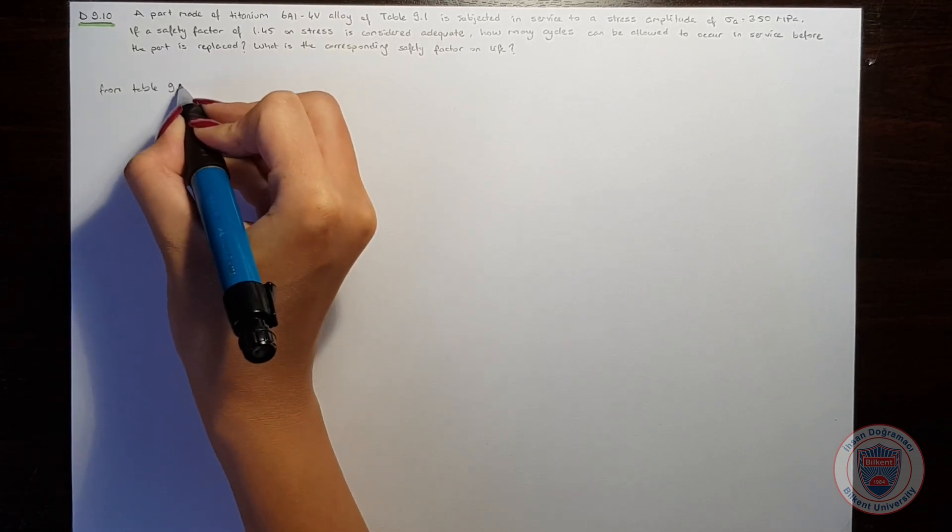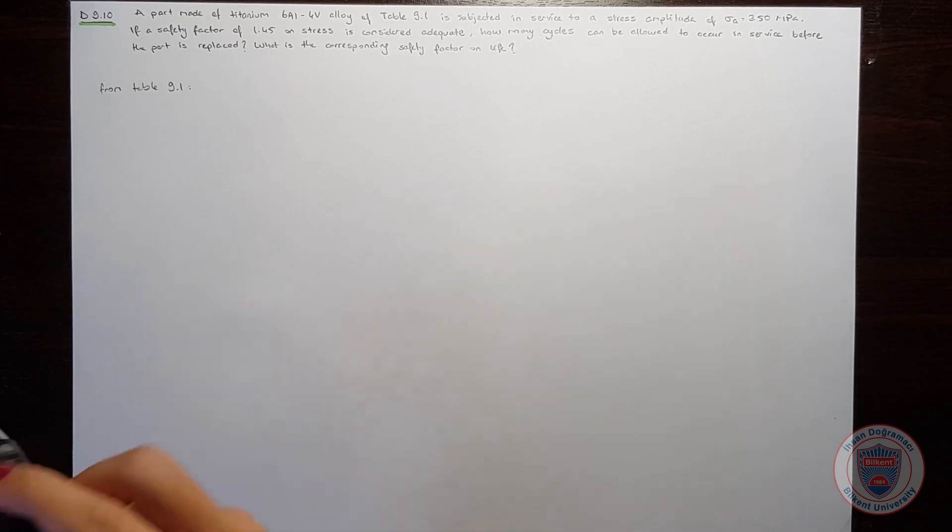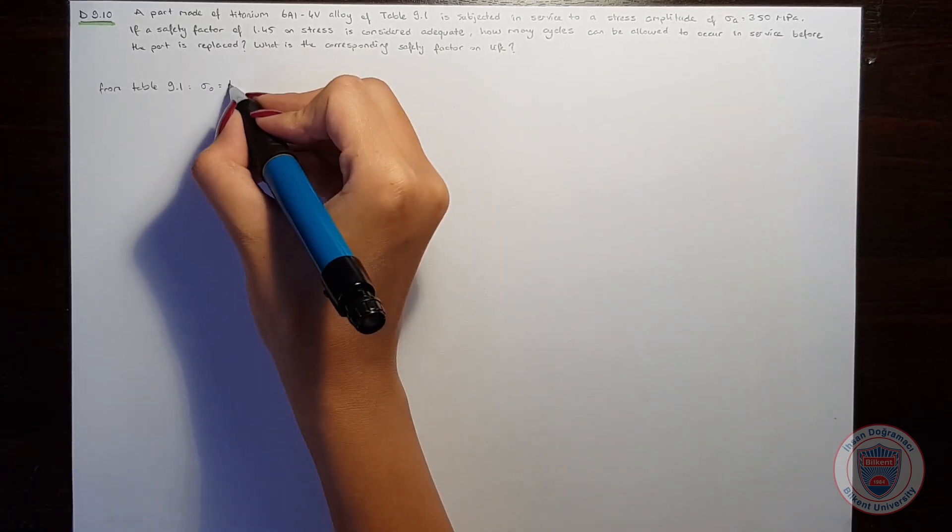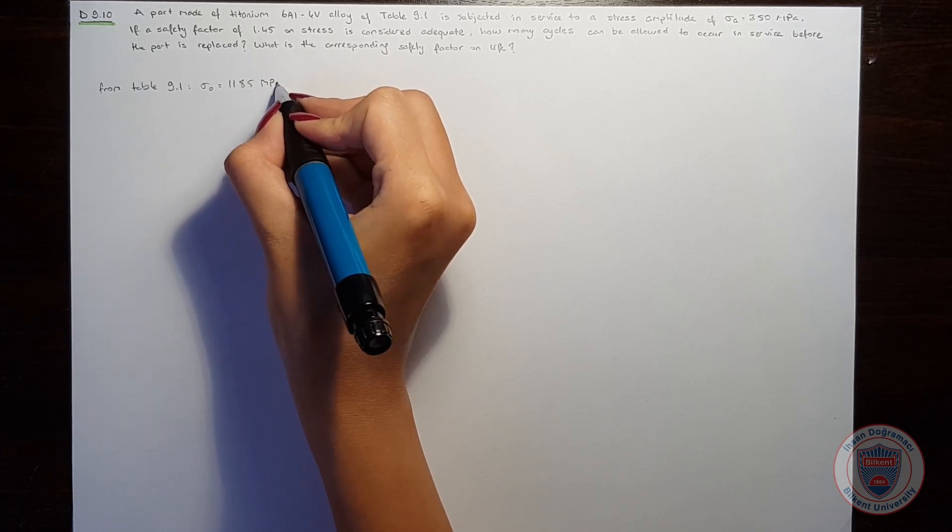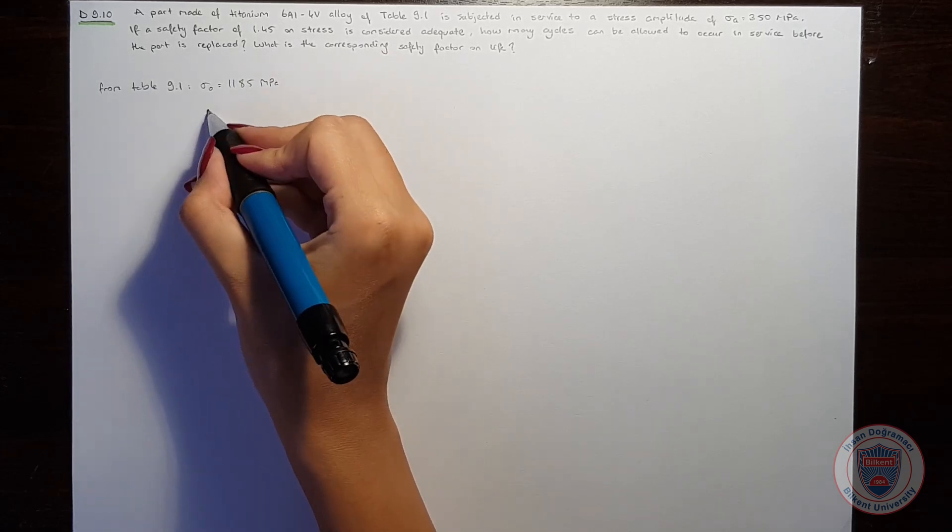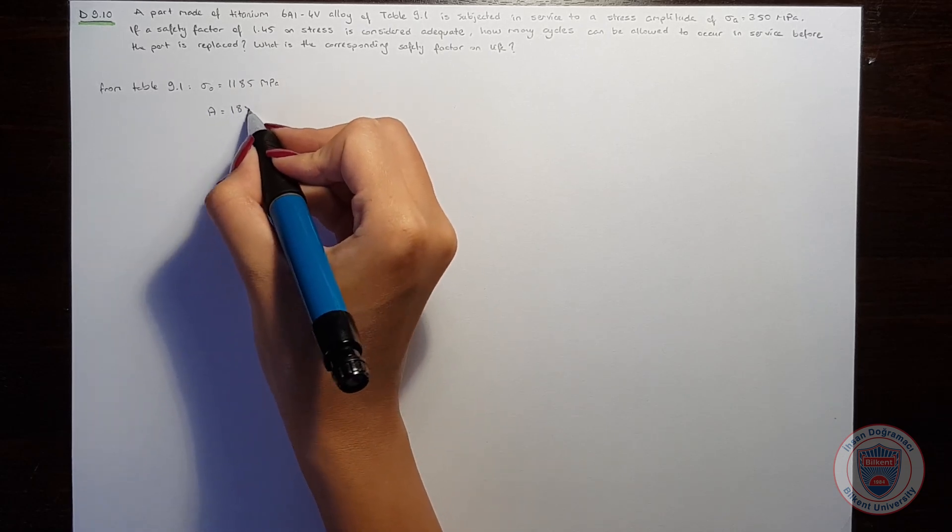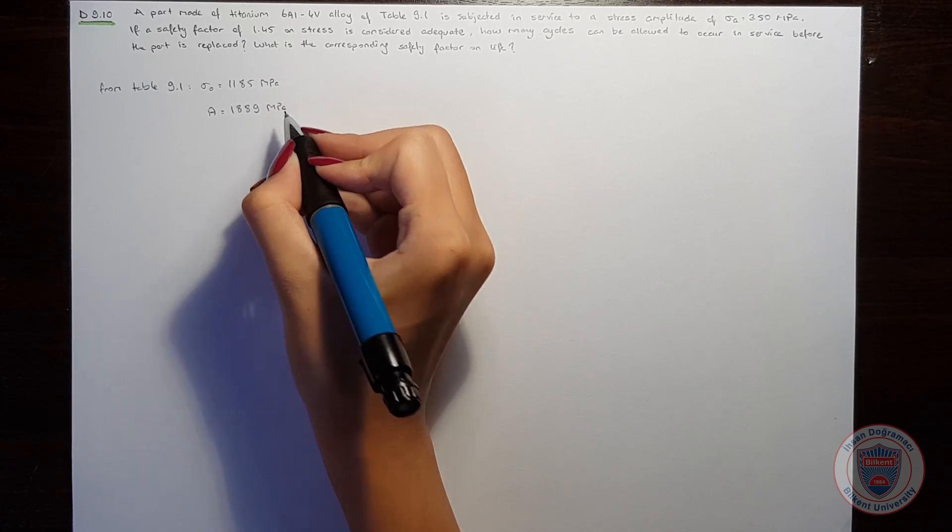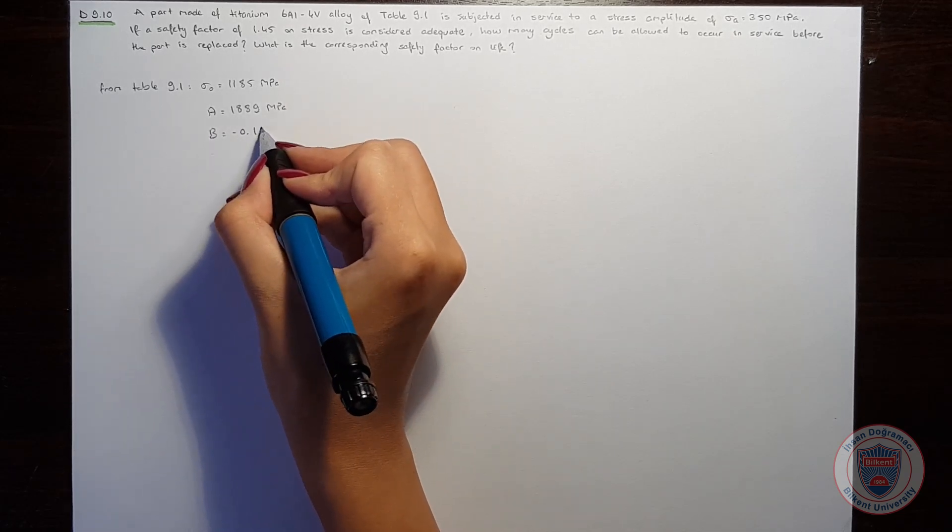From table 9.1, for this titanium alloy, the yield strength is equal to 1185 MPa, A is 1889 MPa, and B is minus 0.104.